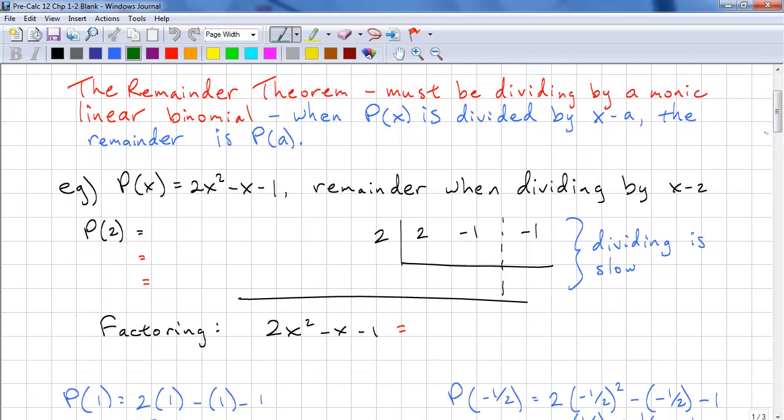Here's an example. P(x) equals 2x squared minus x minus 1, and we want to know the remainder when dividing by x minus 2. So we can just evaluate P(2). This is 2 times (2) squared minus (2) minus 1. It's always good to put brackets around whatever you're substituting. This is necessary when the value that you're substituting is negative.